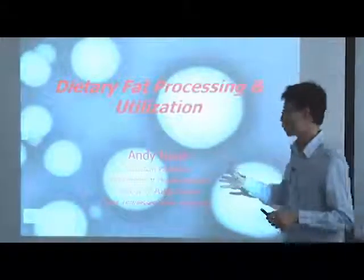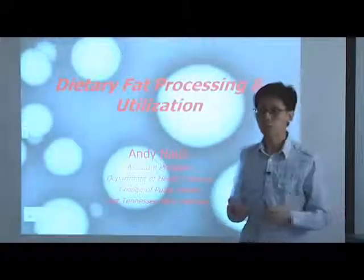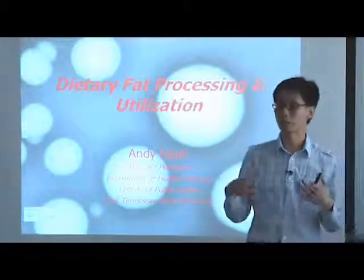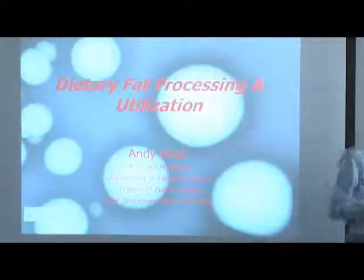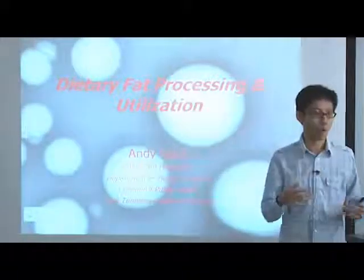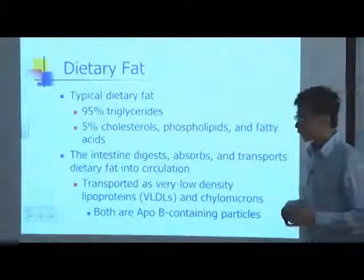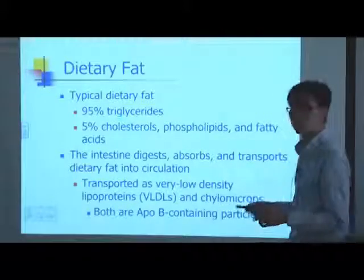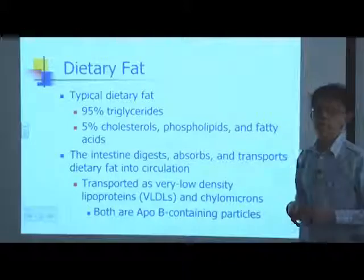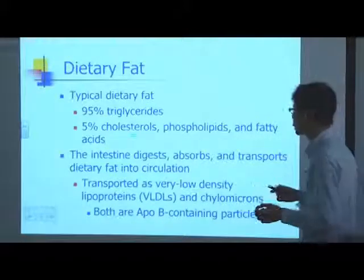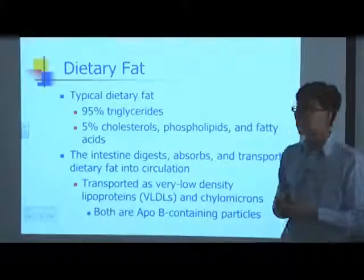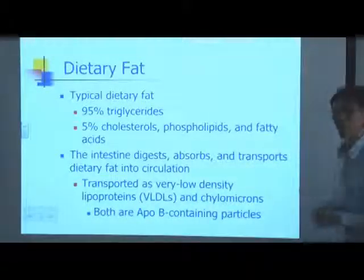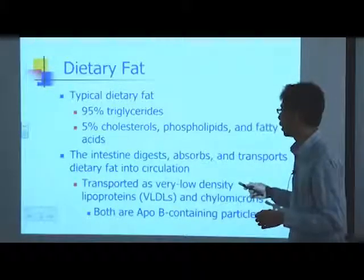Once these chylomicrons are released to the circulation, our peripheral cells — adipose cells, muscle cells, and others — will take the fat from the diet that was secreted and processed by the intestine. When we talk about dietary fat, we typically refer to triglycerides, because this is the most abundant component. The other 5% consists of cholesterol, phospholipids, and fatty acids. I'm going to focus more on triglycerides, and also a little bit on cholesterol.